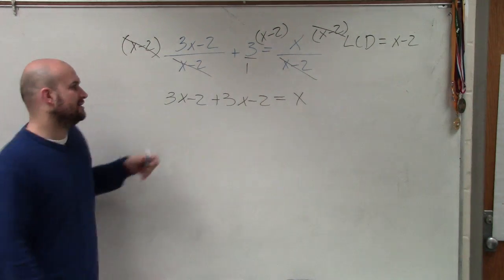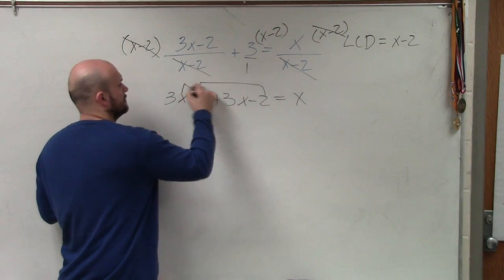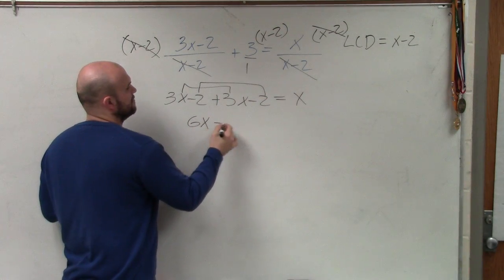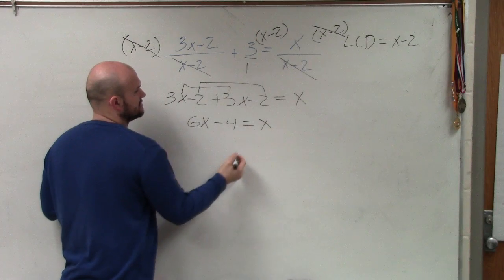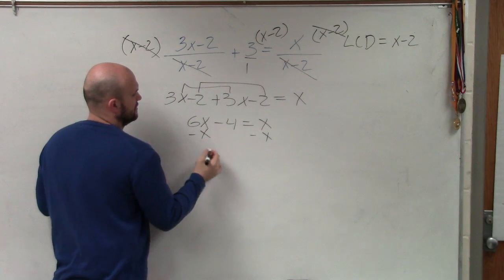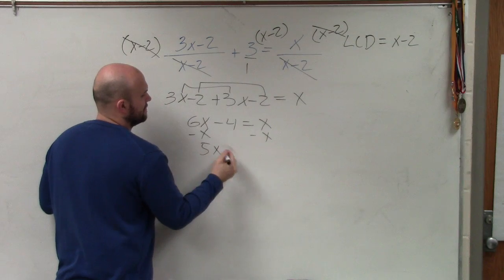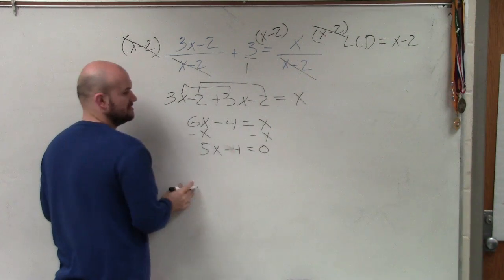So now we combine like terms. I get 6x minus 4 is equal to x. I'll subtract the x to get 5x minus 4 equals 0.